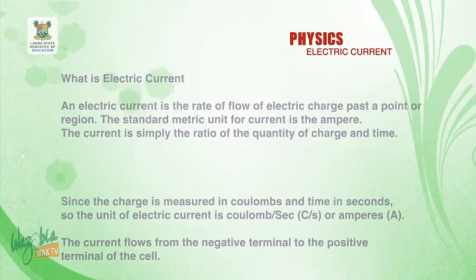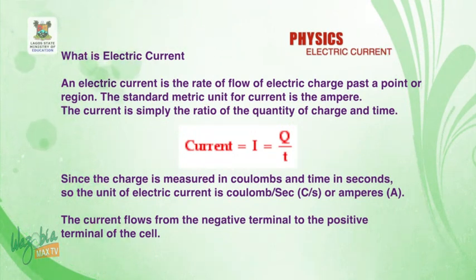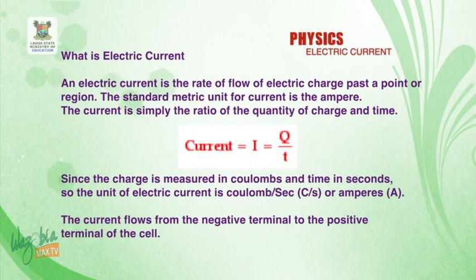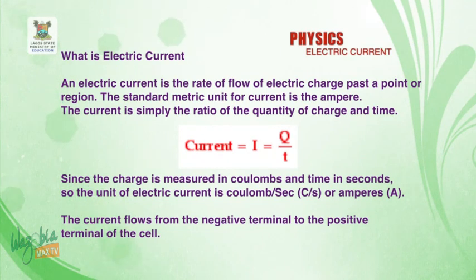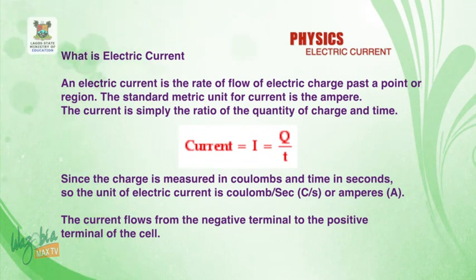What is electric current? An electric current is the rate of flow of electric charge past a point or region. When an electric charge moves from one point to another in a circuit or in a conductor, we are talking about electric current. The standard metric unit for current is ampere. Current is simply the ratio of the quantity of charge and the time. Current, represented as I, equals Q (quantity of charge) divided by time T. So I = Q/T.